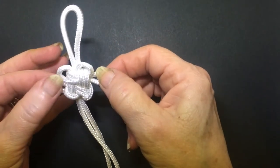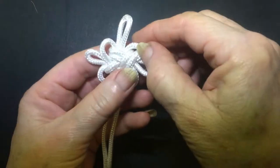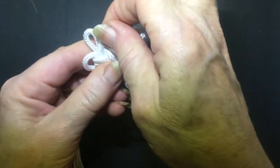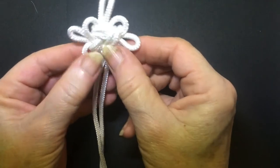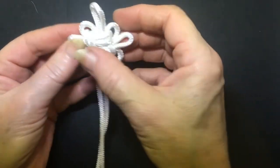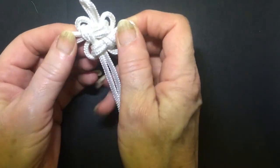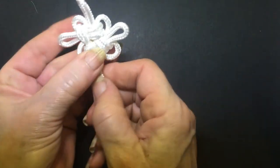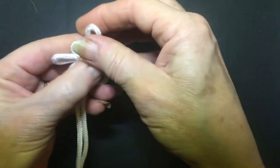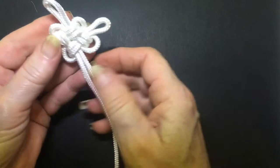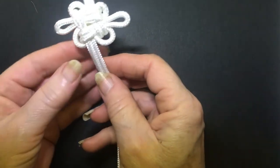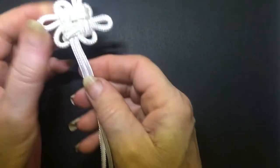As you pull them, these ones are going to get shorter. So once you've pulled your little secondary loops out to the size that you want them, then you can pull your other strands tighter. And then you've got something that looks like that.